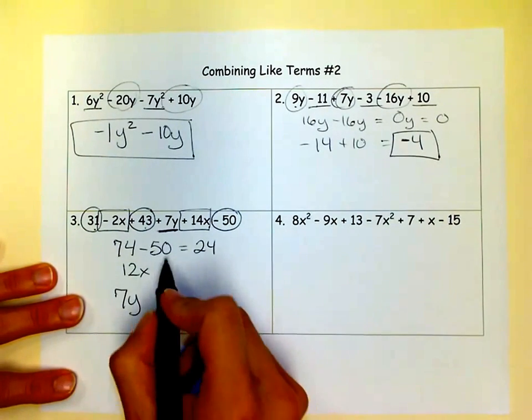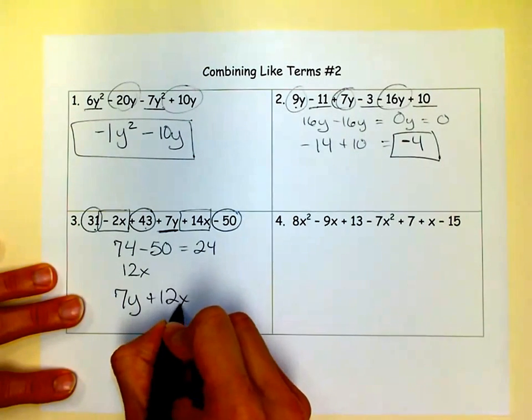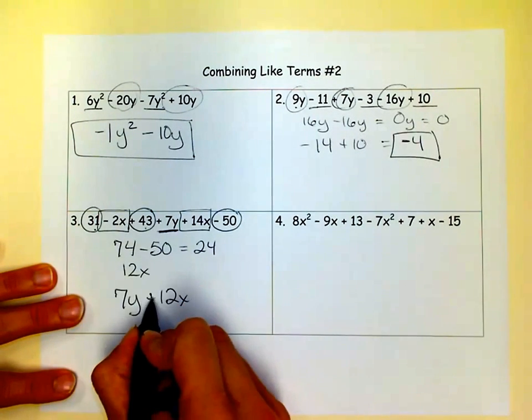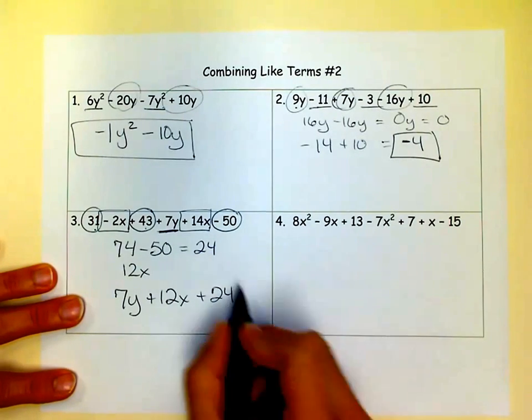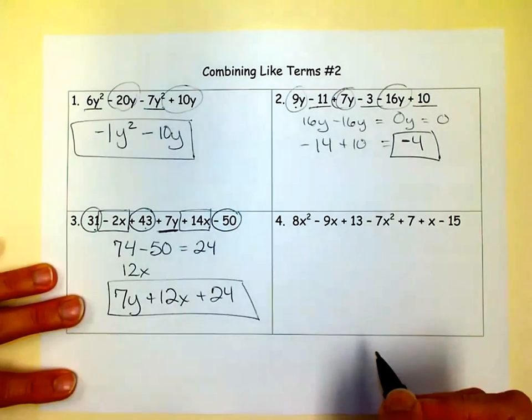So we could put that. It doesn't matter really what order you put it in. I'll put the 7Y first. Then I'll say plus 12X because there was no sign in front of it. That means it's positive. So I'm adding it. And then I get a plus 24 because that also was positive. And that's our answer.